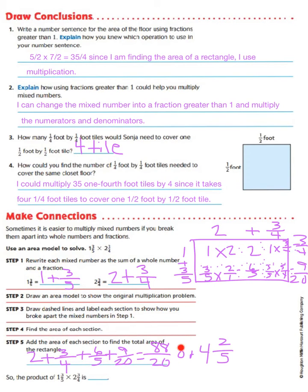which gives us a total of 88/20. Now, when we take this fraction greater than 1, or improper fraction, and divide it out, we see that the product of 1 and 3/5 times 2 and 3/4 equals 4 and 2/5.